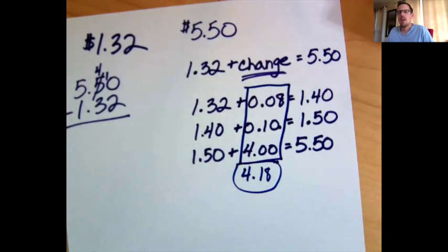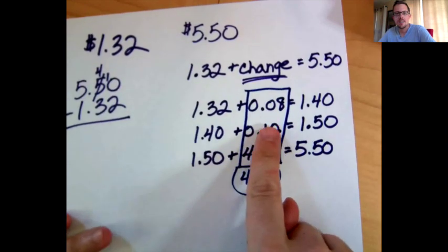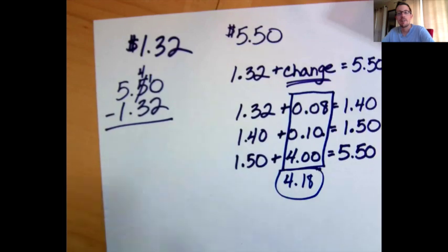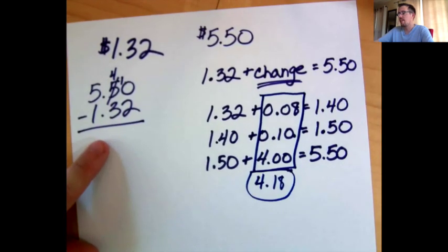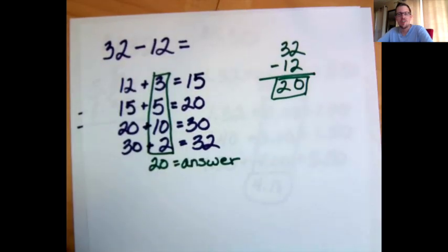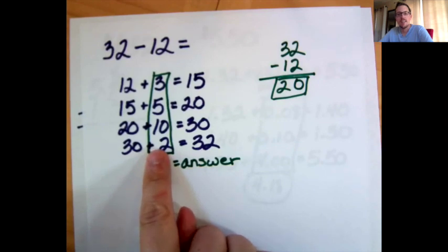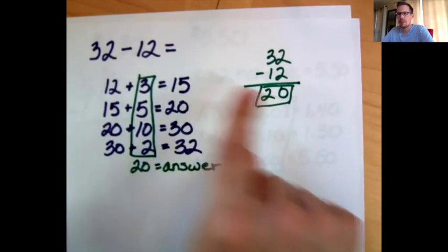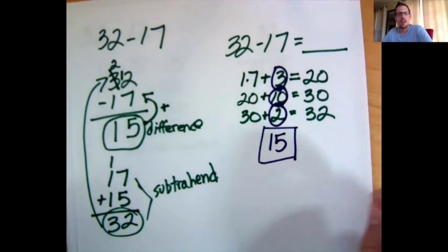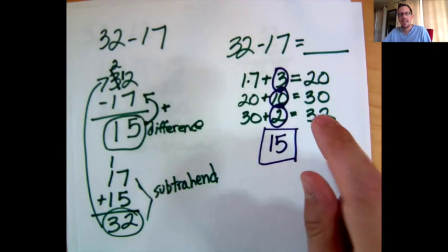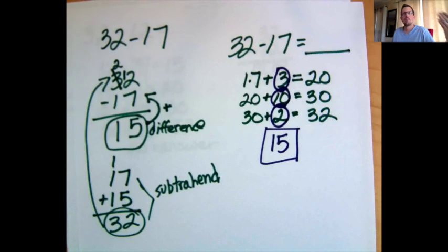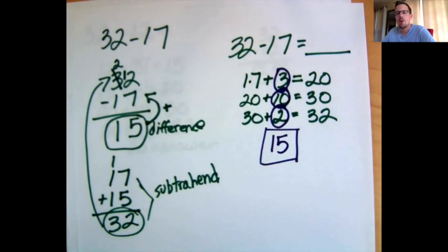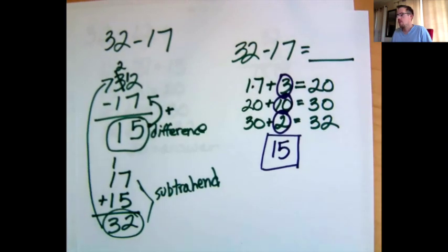I do not think this method should replace the traditional subtraction method — I think they both have a place. The traditional method is great for problems like 32 minus 12; I wouldn't expect anybody to solve that using the new method. For 32 minus 17, I could see going either way. Personally I prefer the new method because that's how I think about it mentally: 17 plus 5 is 22, plus 10 is 32, so the answer is 15. This method is essentially writing down the thought process of mental math.